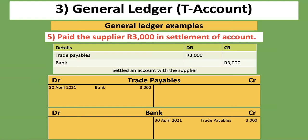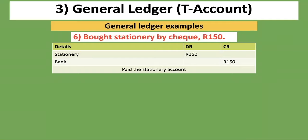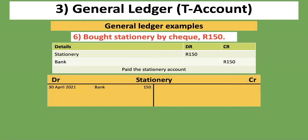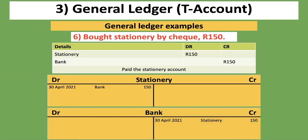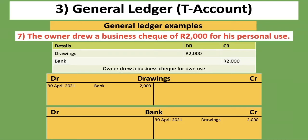The key principle is knowing what two accounts are involved in each transaction — and remember from part one, you can have more than two accounts. Once you've identified them and know from part two what to debit and credit, it's straightforward to do the T-account. Sixth transaction: bought stationery by check, 150 rand. Stationery is an expense on the debit side and we credit bank. For the stationery T-account, detail is bank, amount 150 rand. For bank, detail is stationery, amount 150 rand.